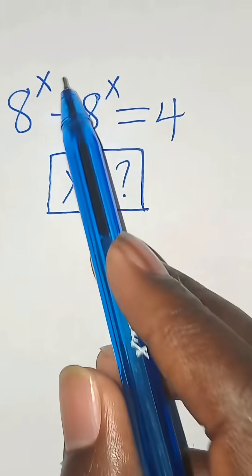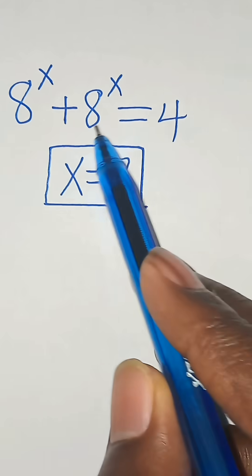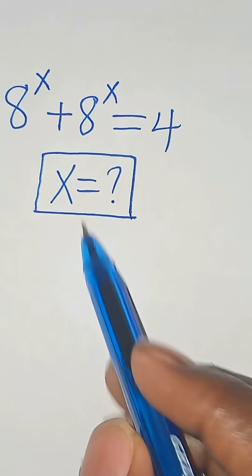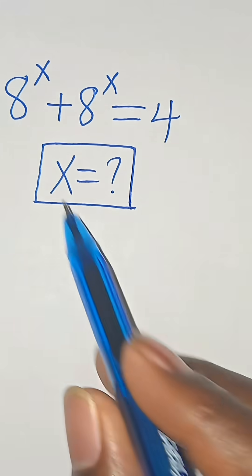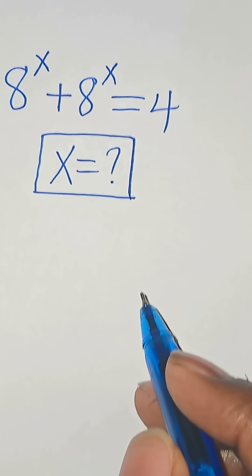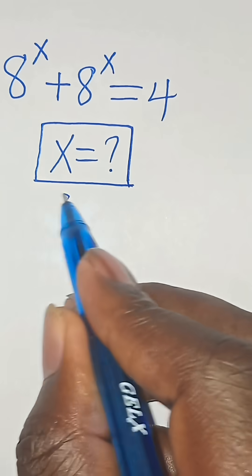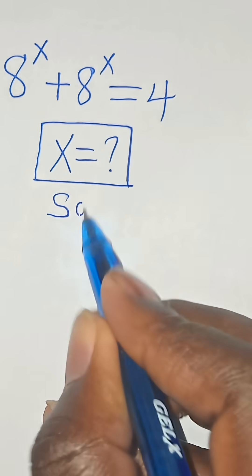8 to the power of x plus 8 to the power of x, this is equal to 4. So what is the value of x? Now, let's provide a solution.